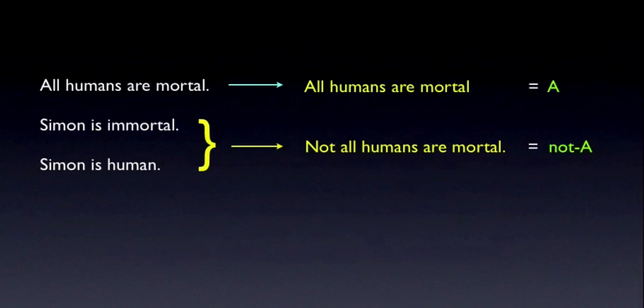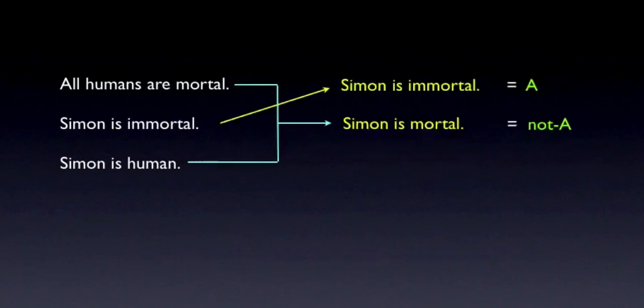The only remaining pair to check is the first and third claims. If it's true that all humans are mortal, and it's true that Simon is human, we can validly infer that Simon is mortal, which contradicts the second claim.